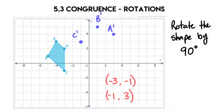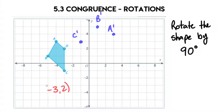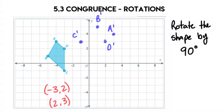Last one is D. D is at negative 3, positive 2. Once again, 90 degrees, so these two flip. D is in quadrant 2 and will end up in quadrant 1, so both stay positive: 2, 3. Now I connect all of my lines, and you can see the exact same shape has now rotated — it's spun up in this direction, going from here up to here.